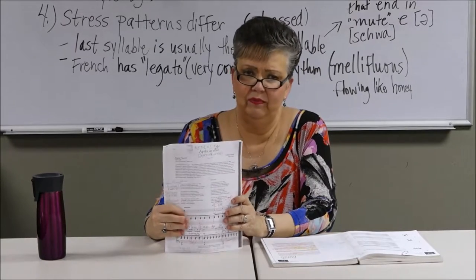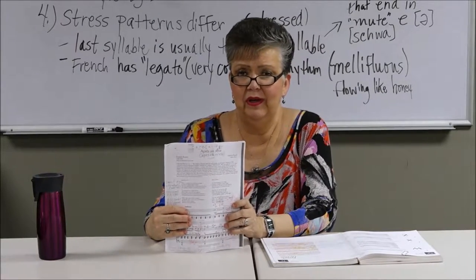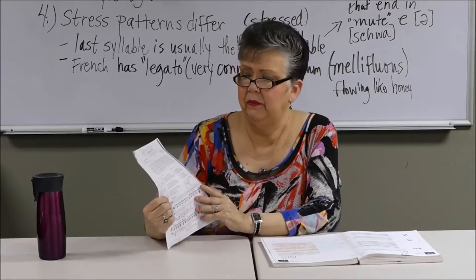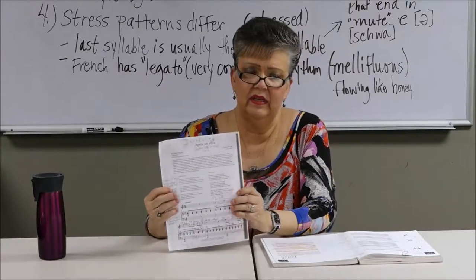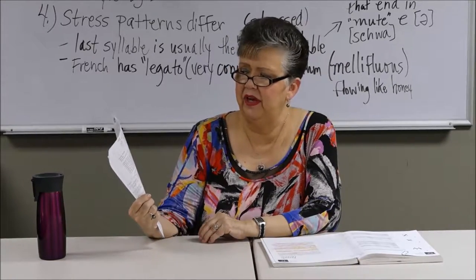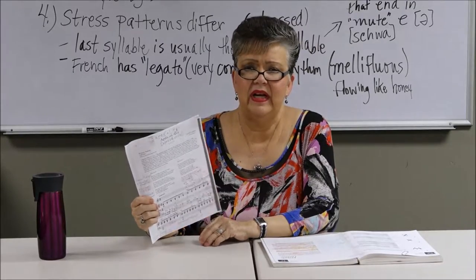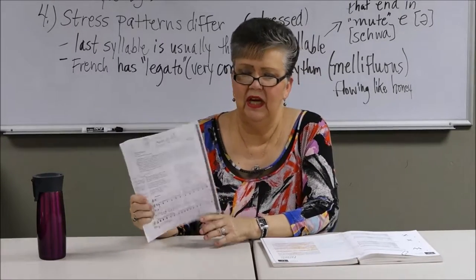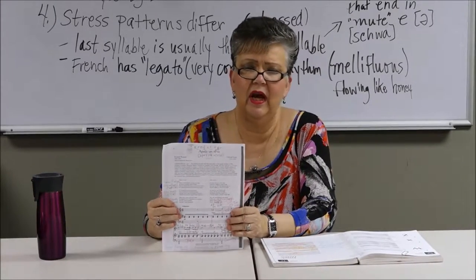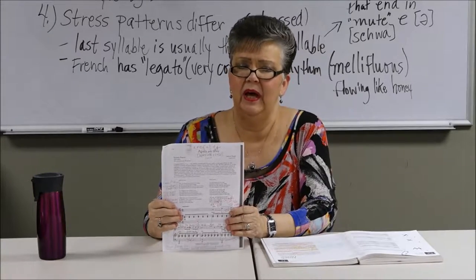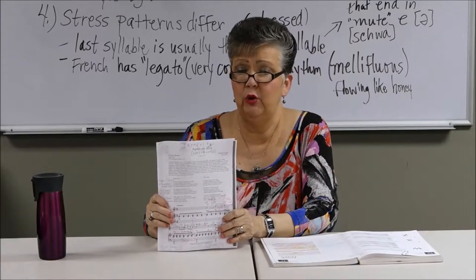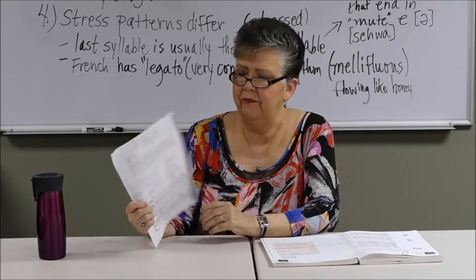In the actual spoken language, the mute E is usually not pronounced. But when there is a note written for a syllable in the music, then you're going to have to pronounce it. The title itself, if you IPA that, you're going to have a liaison. The S becomes voiced and becomes the Z sound. In 'Après un rêve,' you would not pronounce the final V in spoken language, but if you're singing and there is a note for the schwa, you would sing it.